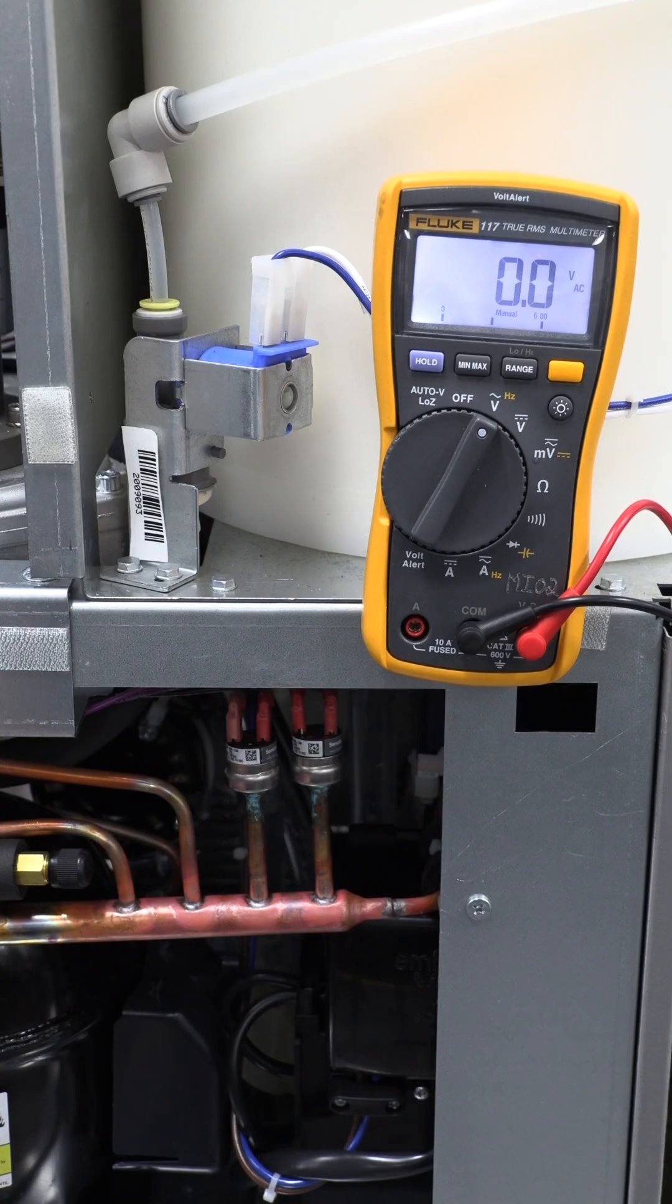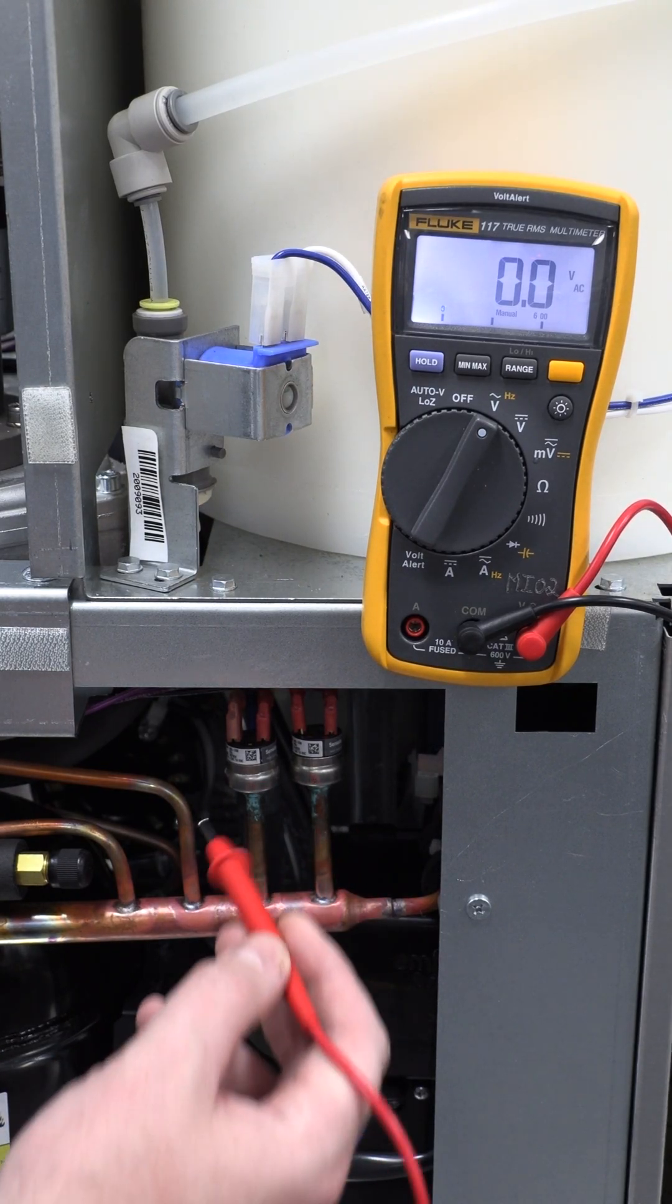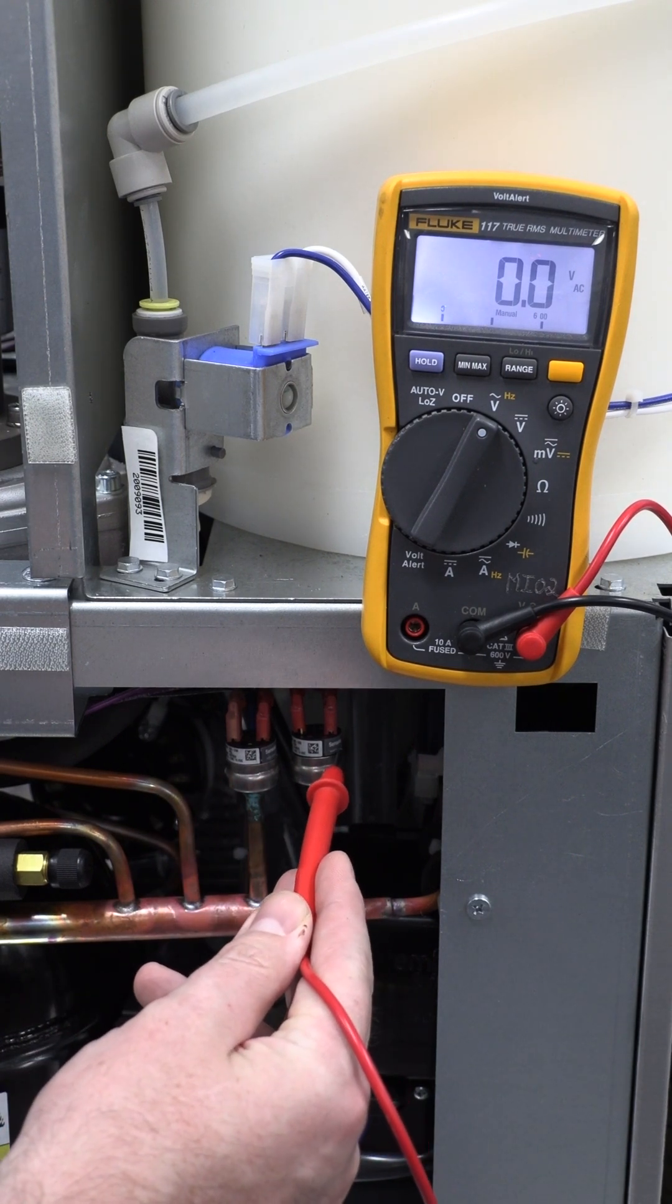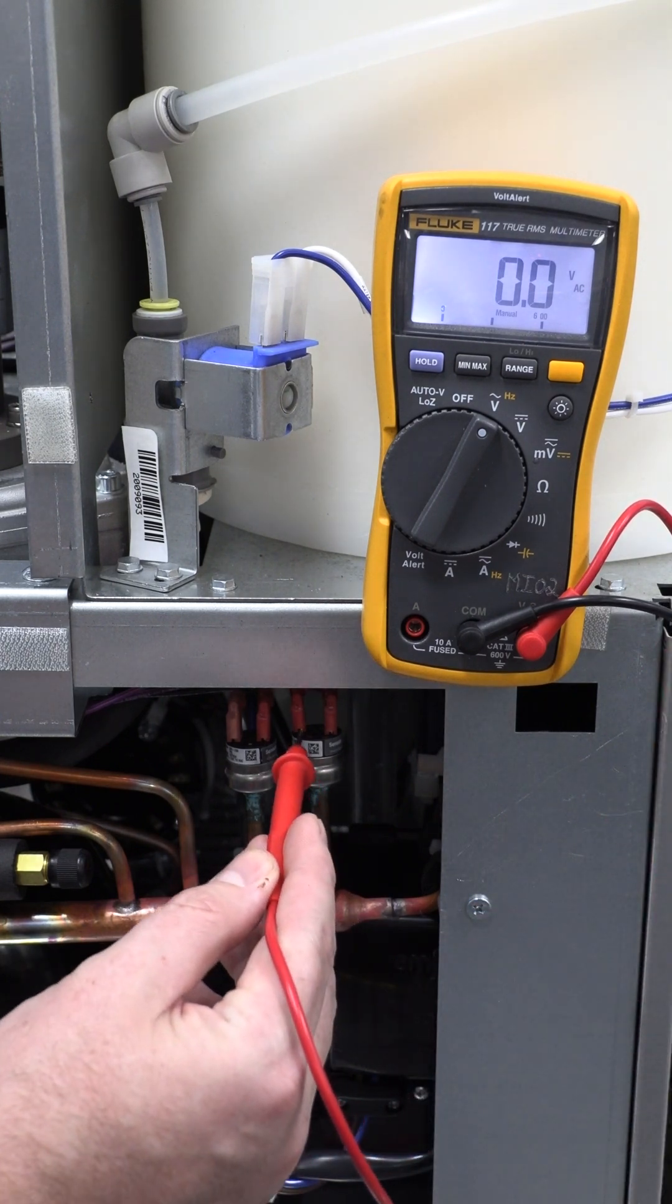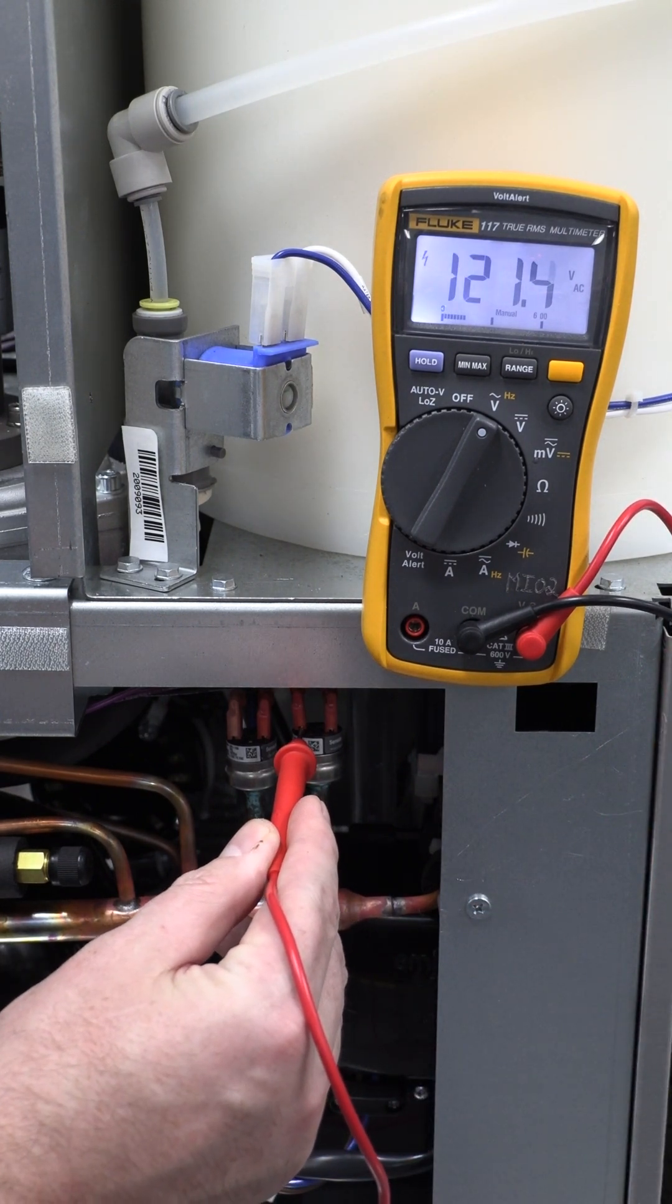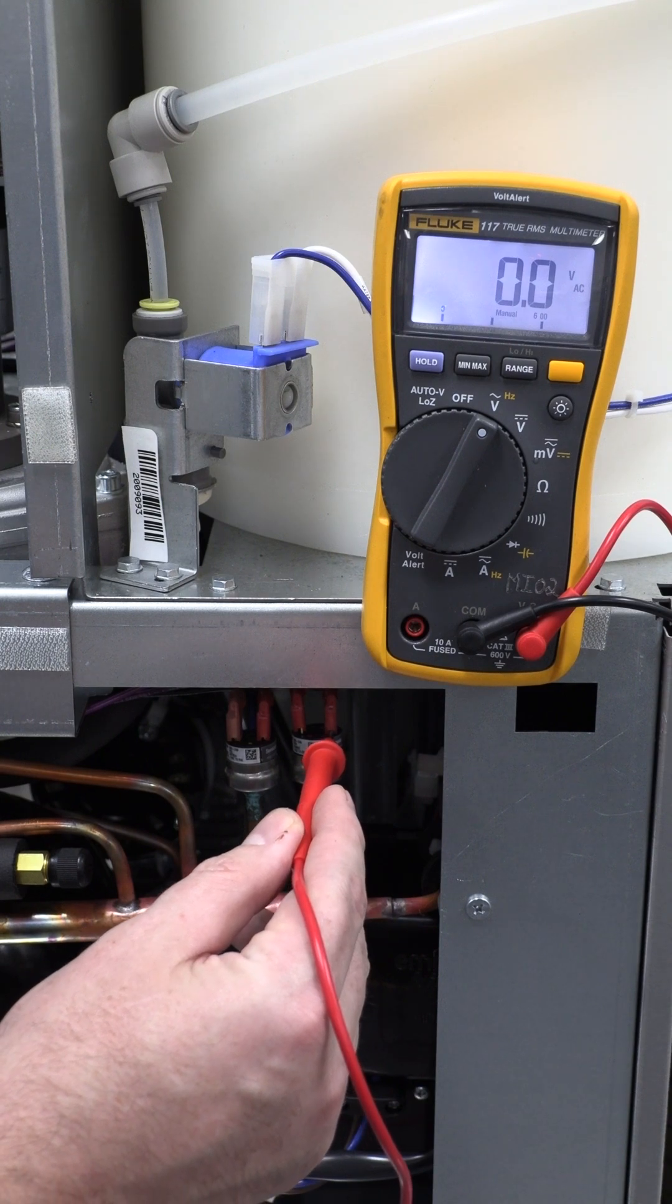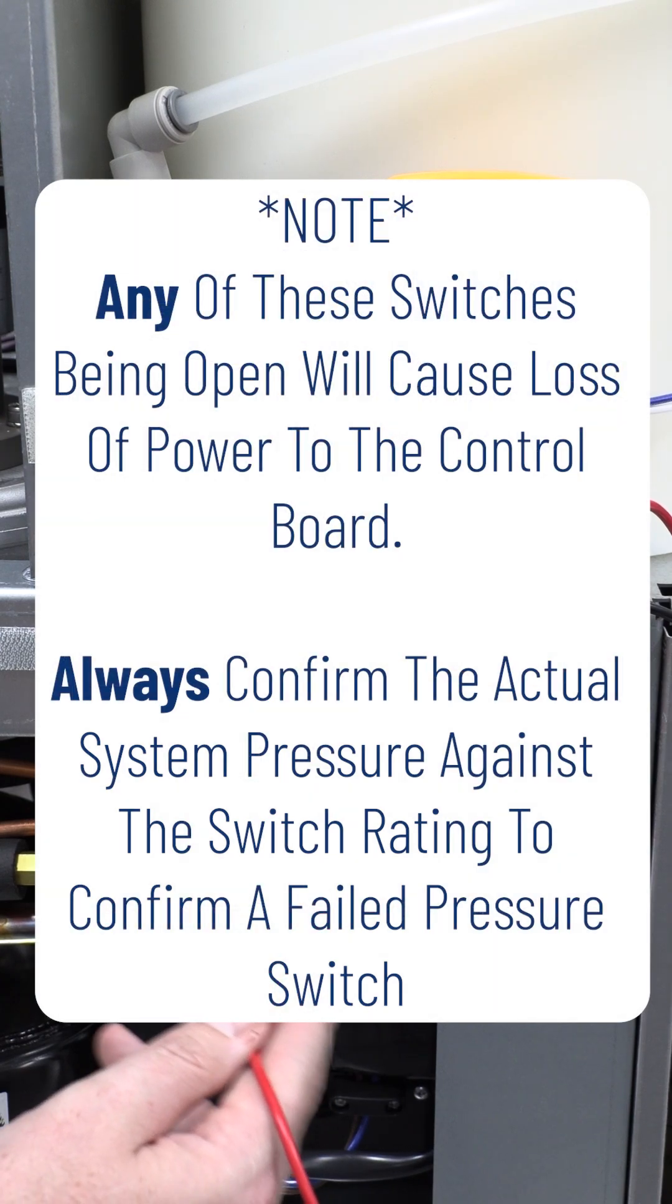Now we're over here looking at the compressor discharge line and you'll see two switches here. The one on the left is your fan cycle switch. The one on the right is your high pressure cutout. Again, my black wire is still connected to the neutral on the other side. If you see here, I have good voltage coming into the switch and an open circuit coming out of the switch. So today we have a failed high pressure cutout causing no power to come to that board.